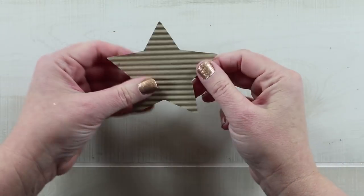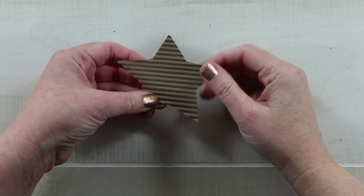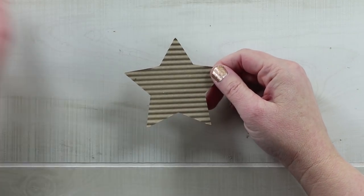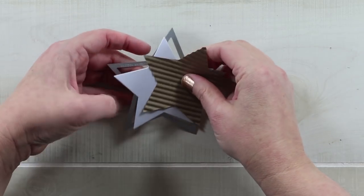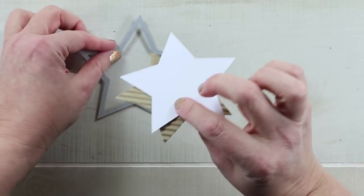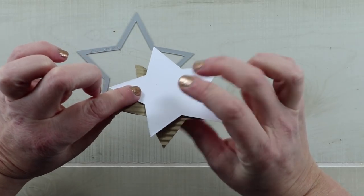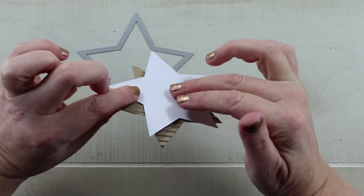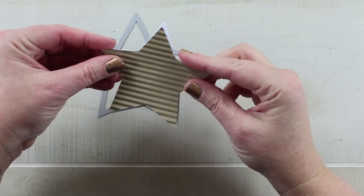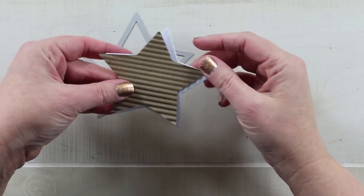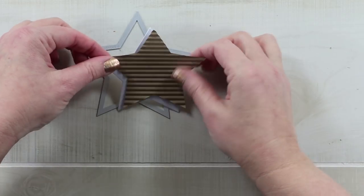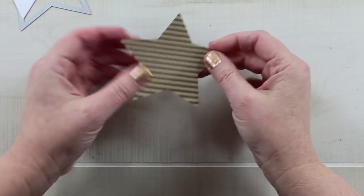Now I've got the star. What I want to do before I add the mixed media items is go ahead and adhere those secondary layers. So this would be the cardstock, and then put your foam behind it. That way, once you're putting your wet mixed media items on, it won't warp the texture of the cutout.